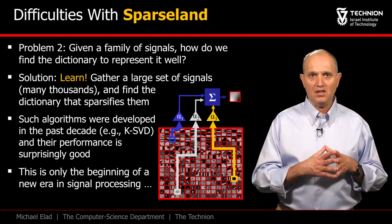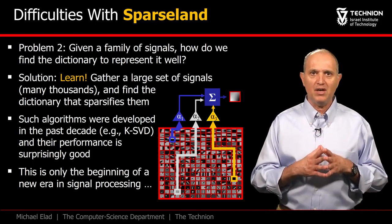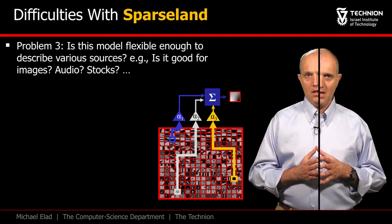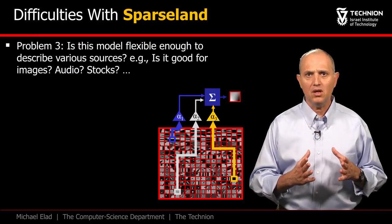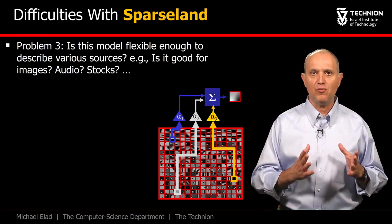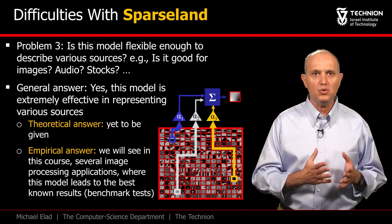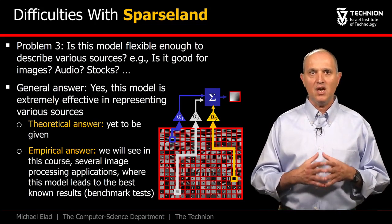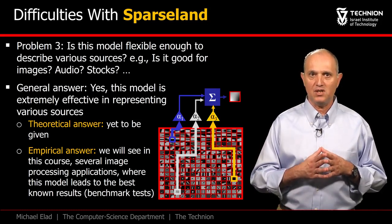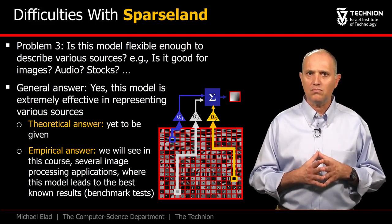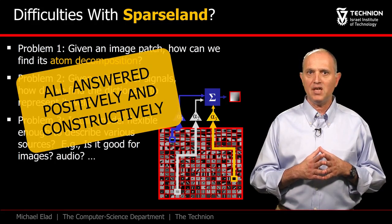This idea of tailoring the dictionary to the data is one of the prime forces of Sparsland, leading to the ability to handle almost any source, thereby serving as a universal model. In our list of challenges, perhaps the toughest of all is: why is it working? What is it that makes it suitable for the diverse information sources we operate on? We can take the empirical route and simply say that it has been used very successfully in a long series of tasks and for various data sources. A more challenging path is to suggest deep theoretical explanations for these success stories, something that researchers are still working on. As we have seen, the Sparsland model poses tough challenges, but ones that have been answered constructively.